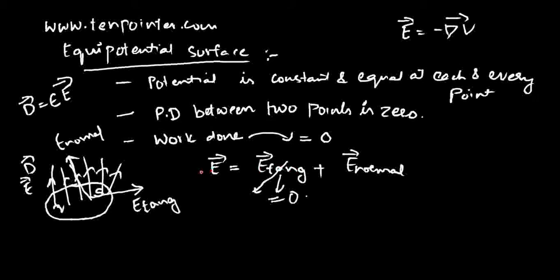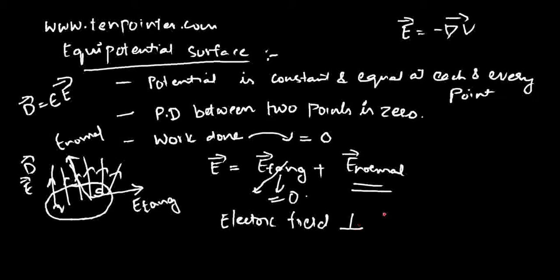This leads us to the concept that only the normal component of electric field exists on an equipotential surface. Since E is only E-normal, that means for an equipotential surface, the electric field is perpendicular to it. On an equipotential surface, only the normal component of electric field exists, so the electric field is perpendicular to an equipotential surface.